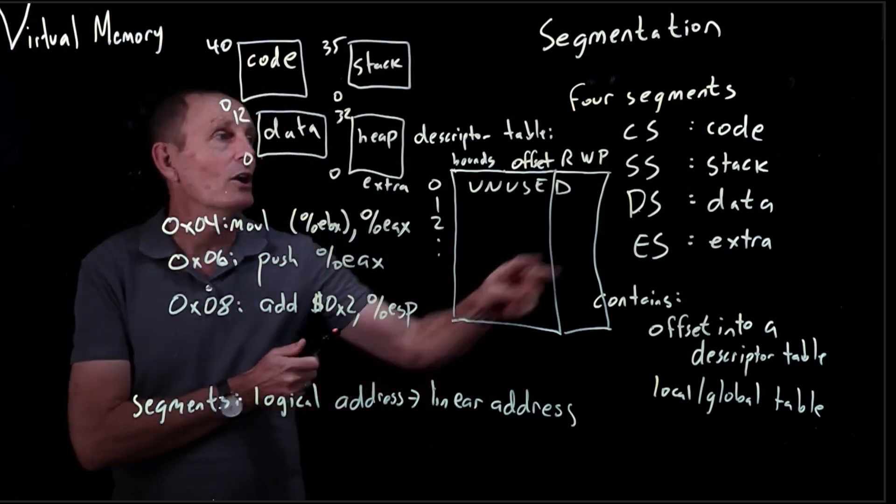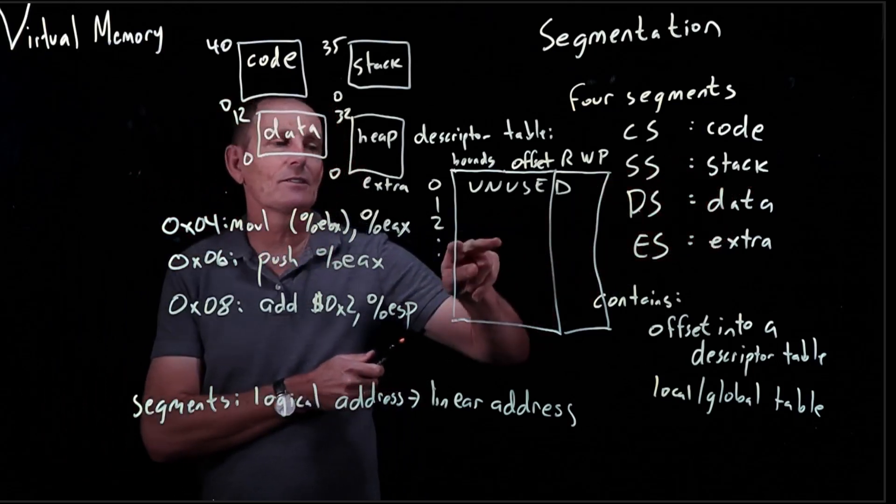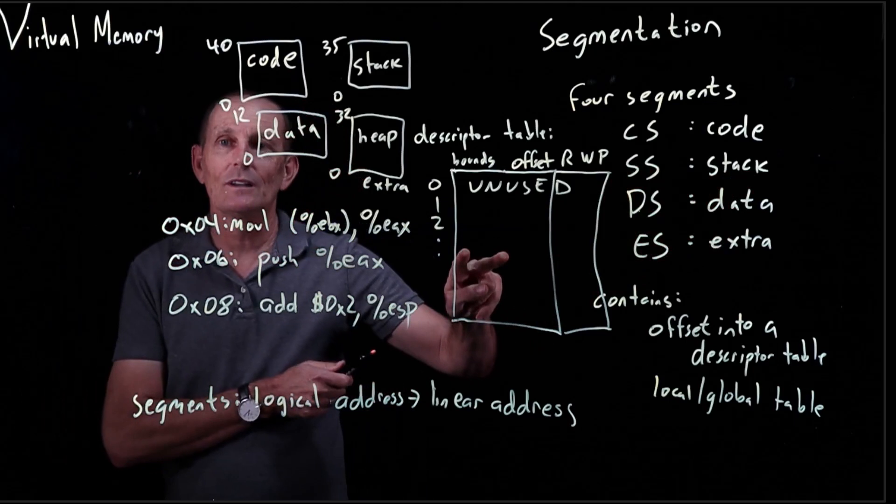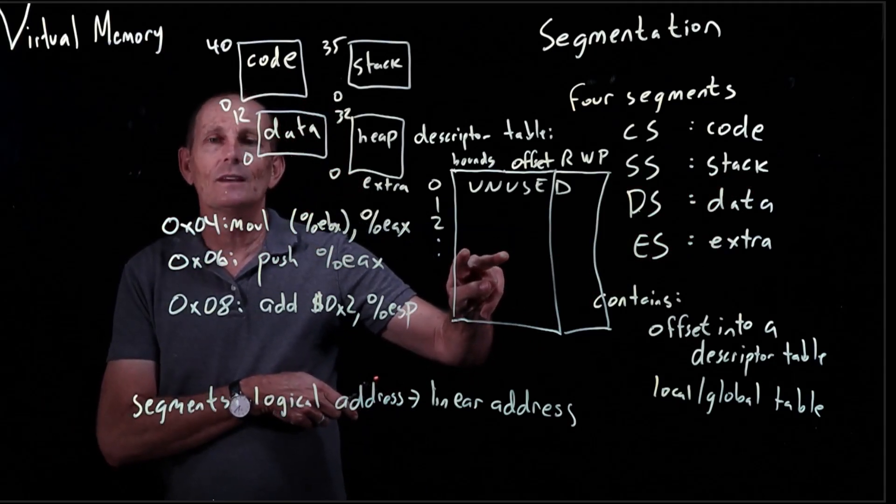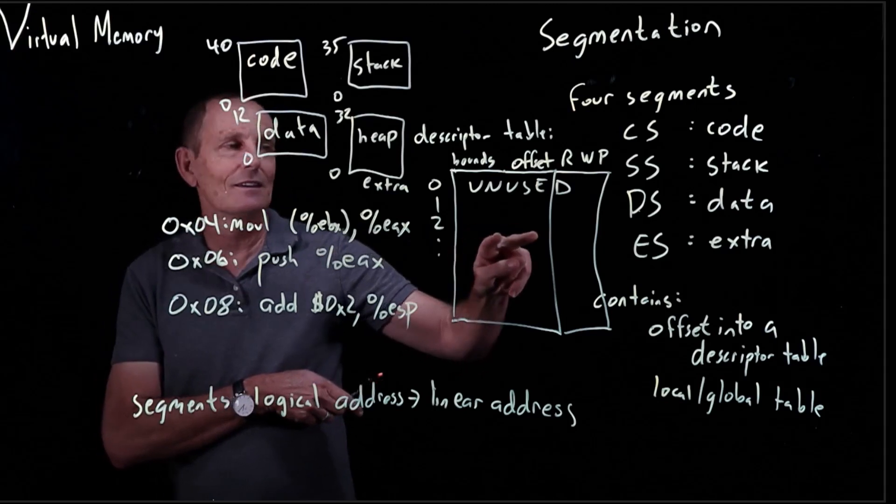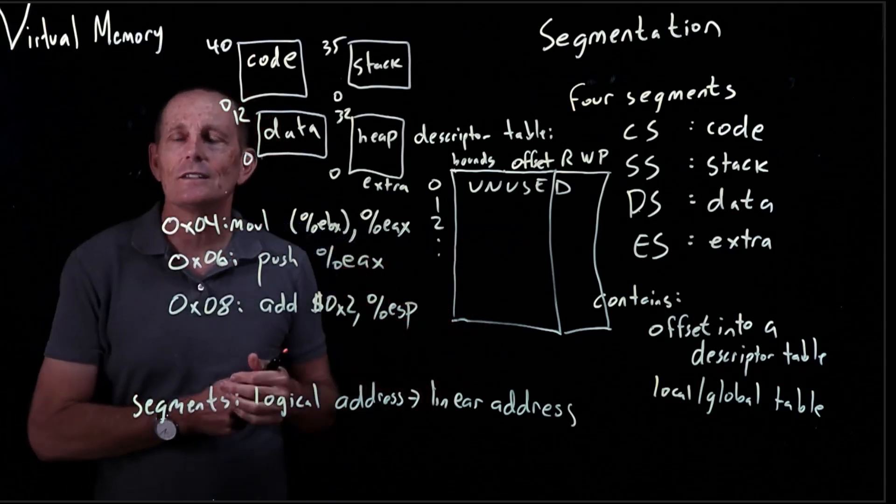Because it's a push instruction that deals with the stack pointer, this is going to use the stack segment register. So the stack segment register will go to its appropriate descriptor in the descriptor table, do its bounds checking, take the offset, and then that will affect the stack pointer.